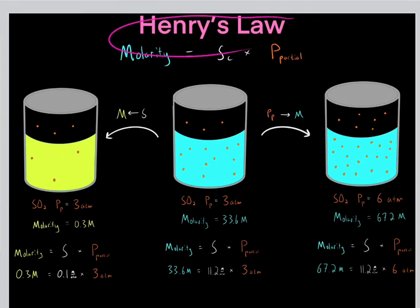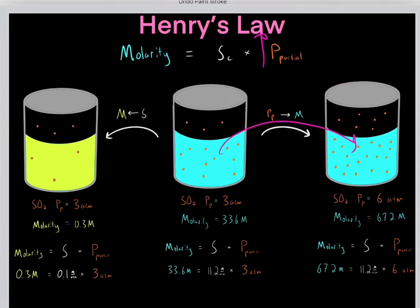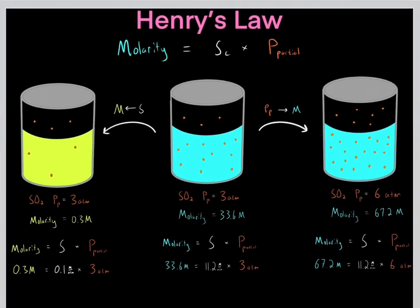The key point for Henry's Law: there are two variables that influence how much of a gas dissolves in a solution — the partial pressure and the solubility constant. Increasing the partial pressure increases the amount of gas that dissolves. Increasing the solubility constant also increases the molarity and the amount of gas that dissolves in the solution.